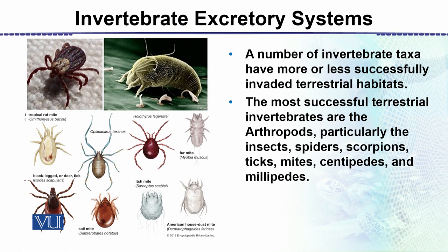There are a lot of groups of animals — particularly arthropods — which have more or less successfully invaded terrestrial habitats. Insects especially live on dry surfaces and land, and are found in every kind of habitat. The most successful terrestrial invertebrates are the arthropods, and among them are insects, spiders, scorpions, ticks, mites, centipedes, and millipedes. These are quite different groups, and arthropods make up about 60% of all animals on Earth.